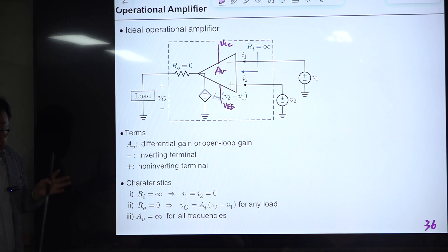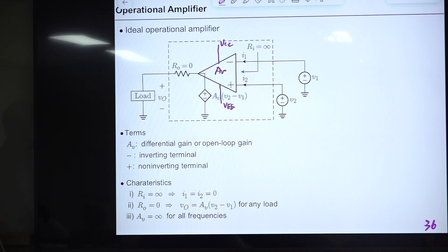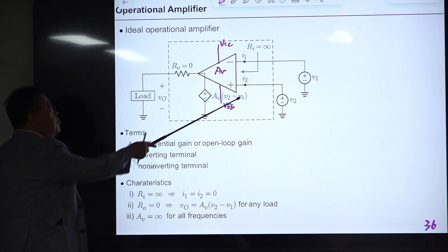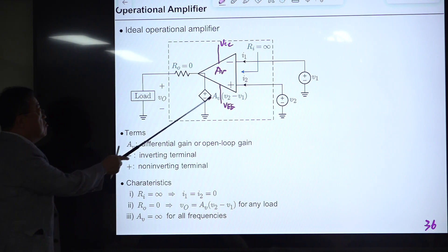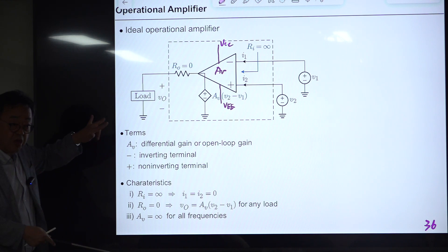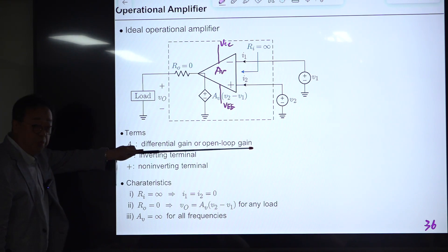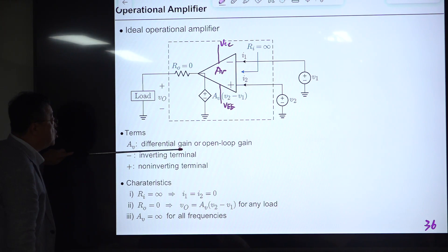The op-amp is inherently an unstable device because of its very large gain. Without feedback, even a tiny difference between inputs drives the output to saturation. So we always use it with negative feedback to stabilize it. One application that uses the op-amp without feedback is a comparator — but for all other applications, negative feedback is always present.